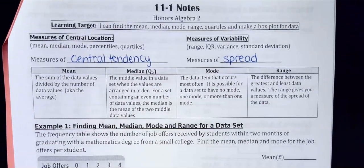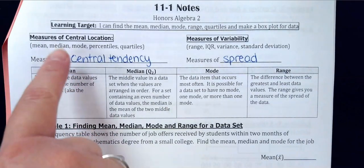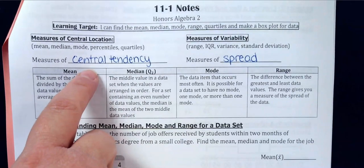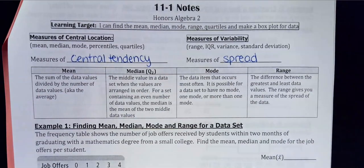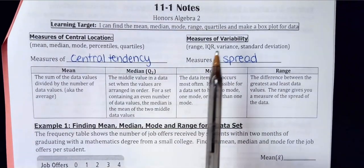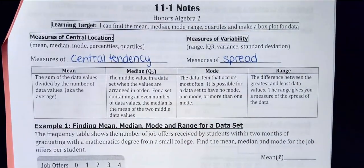This unit is all about statistics. In general, there are two categories for analyzing data. First, measures of central location, also called measures of central tendency — that includes mean, median, mode, percentiles, and quartiles. Second, measures of variability, which describes how spread out the data is. Those include range and interquartile range, which we'll cover today, and variance and standard deviation, which we'll cover in a couple of days.